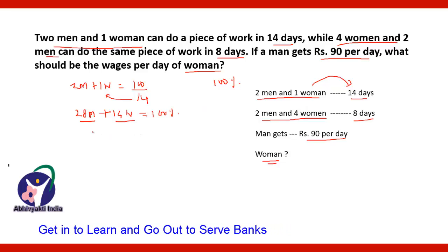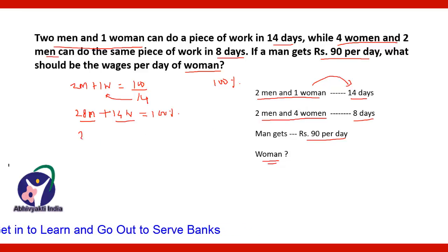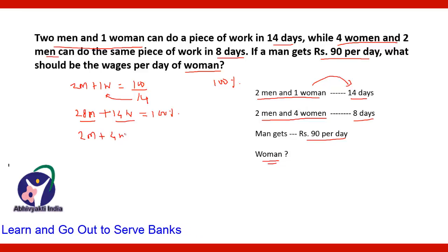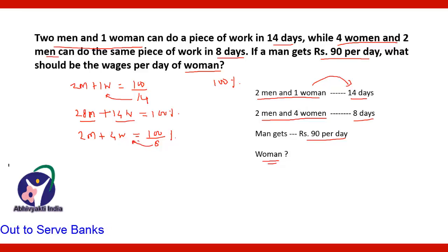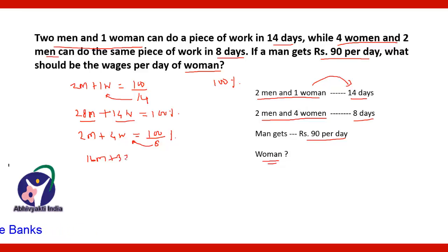In the second case, 2 men and 4 women finish the work in 8 days, meaning in 1 day they finish 100/8% of the work. Multiplying both sides by 8 gives 16 men + 32 women = 100% work, so 16 men and 32 women will finish 100% work in 1 day.